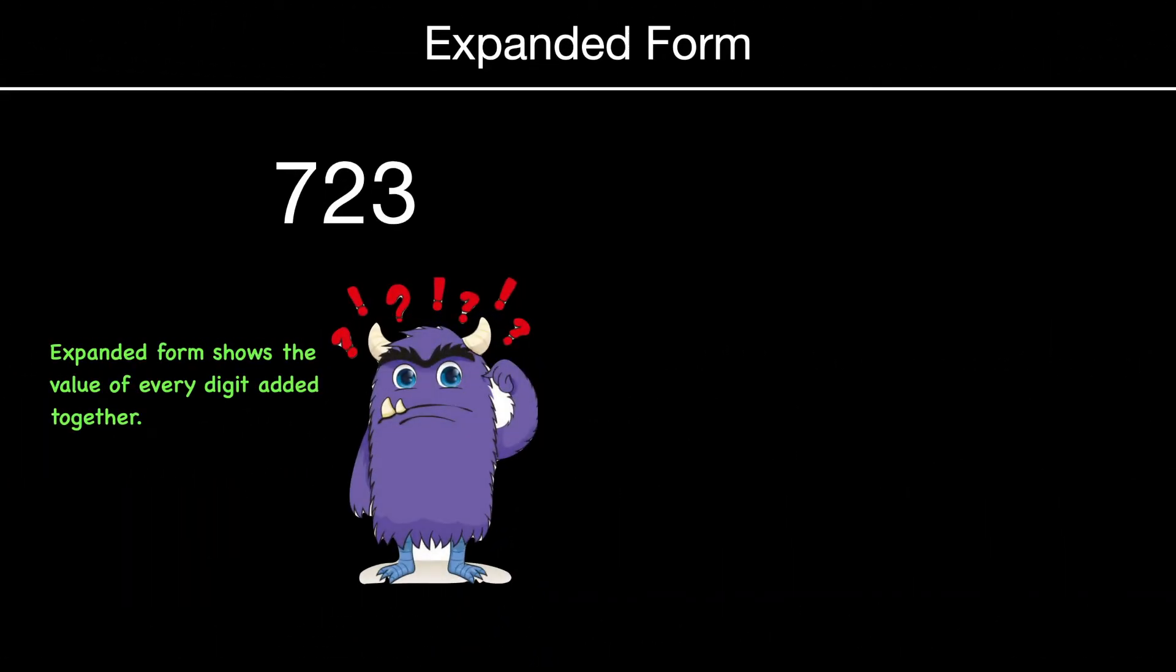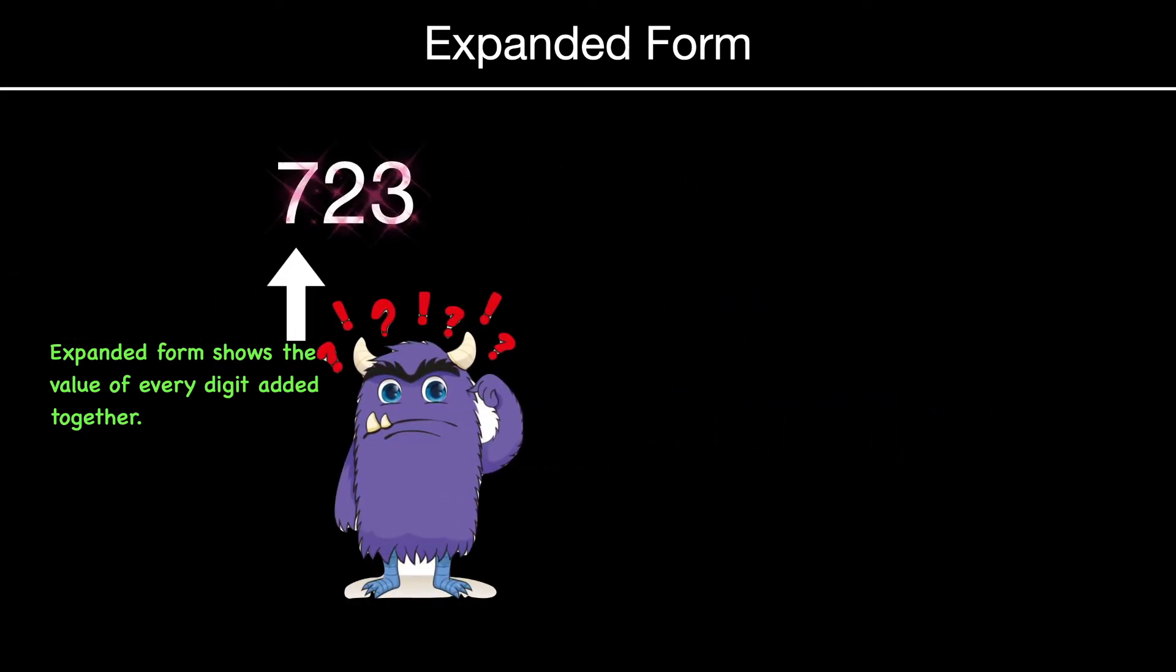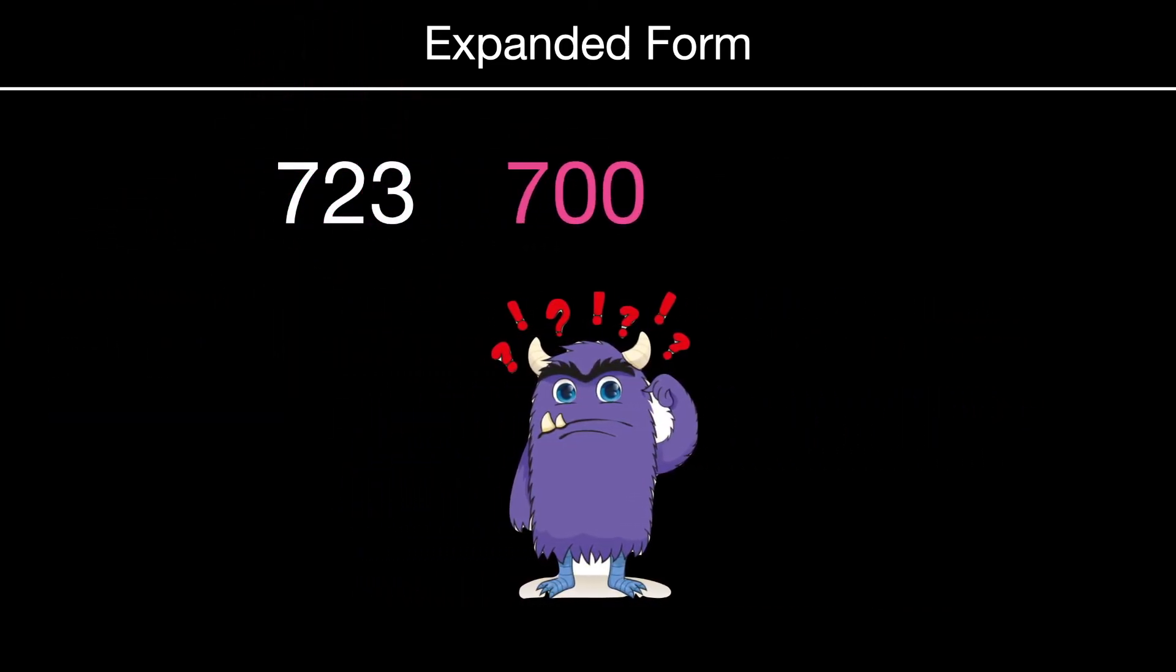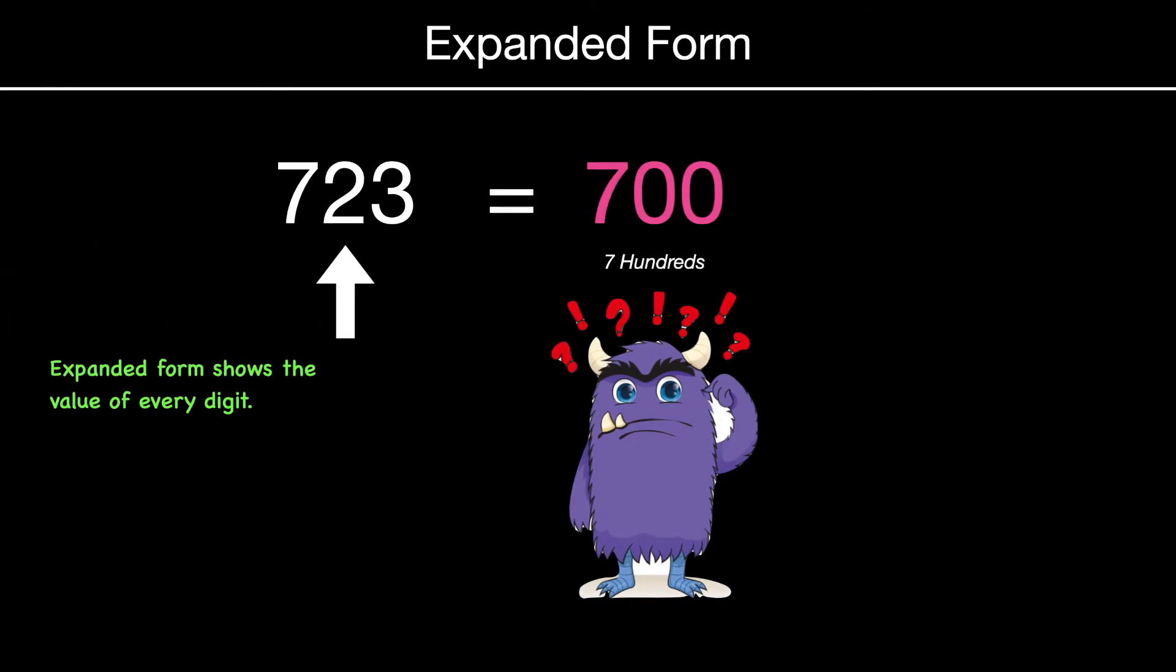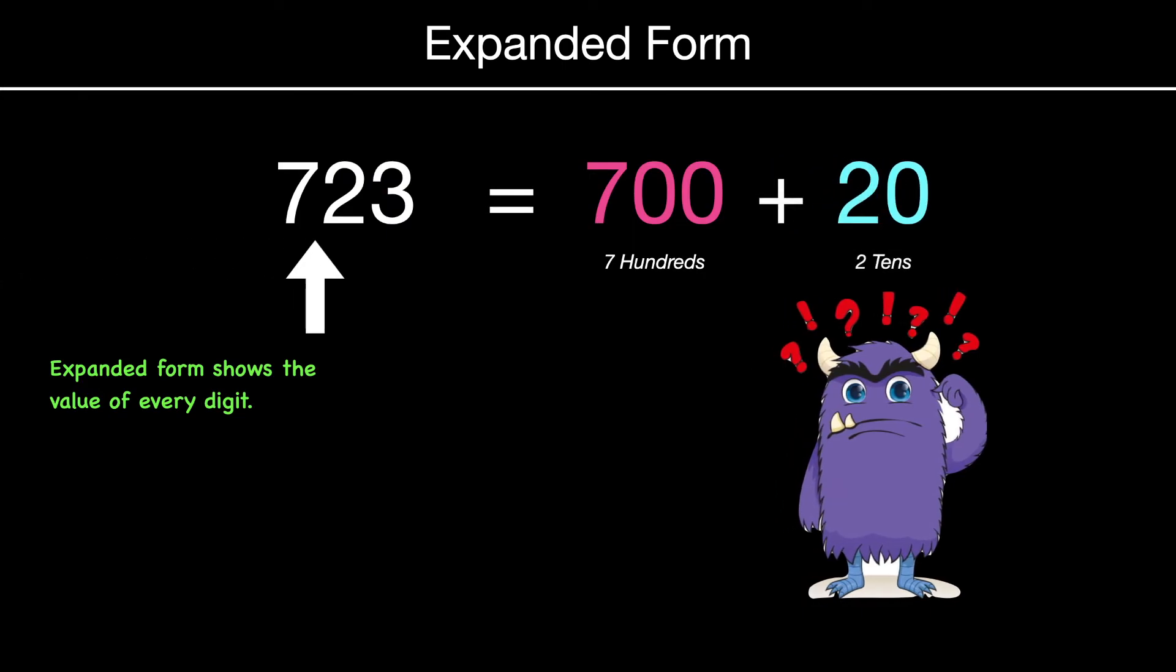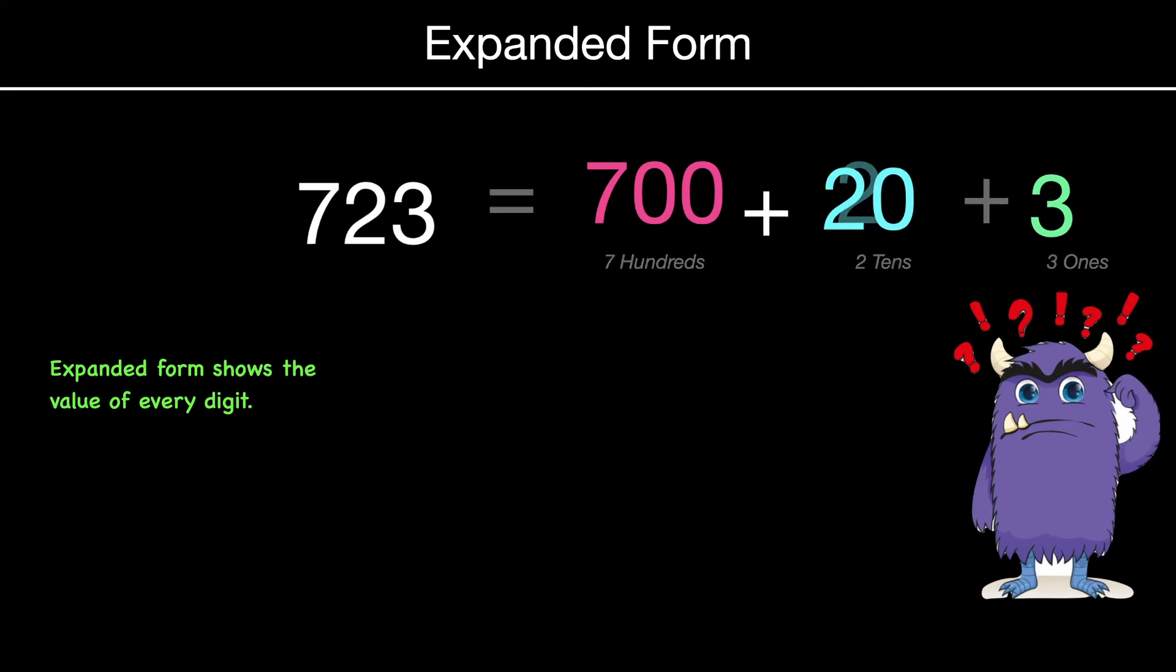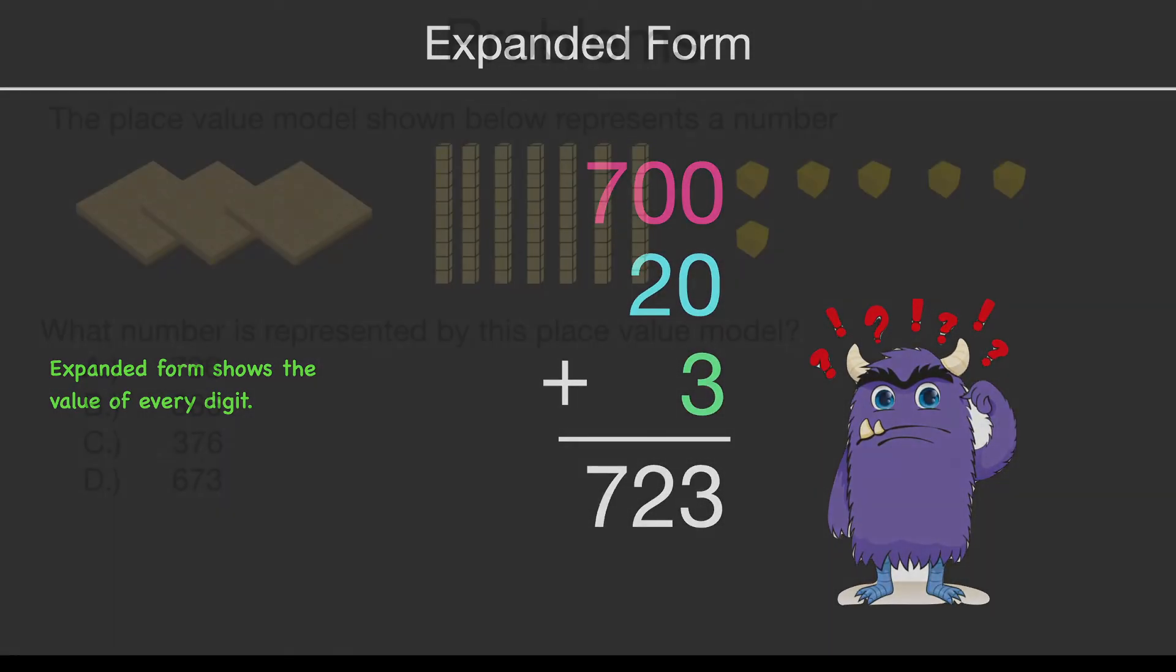Expanded form just means that we're showing the value of every digit. So 723 in expanded form would just look like that, right? 700 plus 20 plus 3. Now, how did we do that? Real quick, the 7 is just 700, right? The 2 is actually 2 tens or 20, and the 3 is just our 3 ones. So that's where we get our 3 place values in expanded form. You could also write that going up and down if you like.